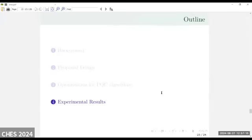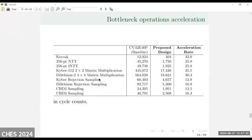Let us look at the experimental results. We have many SIMD optimizations for NTT, polynomial multiplication, data sampling, and hashing. Here we show the bottleneck operation acceleration. The baseline is the base processor, and here is our proposed design with the acceleration rate. We achieve more than 10 times acceleration for Keccak NTT, multiplication, data sampling, and so on. So we have achieved very good performance.